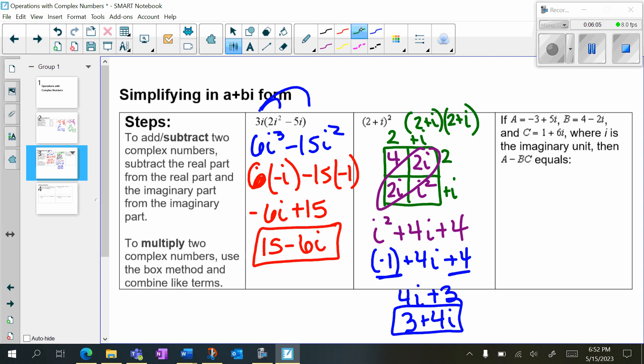Next, it says if a is equal to negative 3 plus 5i, b is equal to 4 minus 2i, and c is equal to 1 plus 6i, where i is the imaginary unit. Then we want to do a minus b times c. So we're going to rewrite this as the following: a, which is negative 3 plus 5i, minus b, which is 4 minus 2i, times c, which is 1 plus 6i.